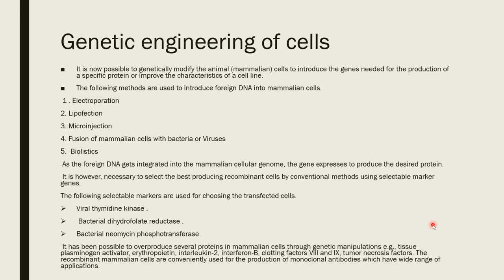As the foreign DNA gets integrated into the mammalian cellular genome, gene expression can produce the desired protein. After the desired protein is produced, we need to select the recombinant cells. Selectable markers such as thymidine kinase, bacterial dihydrofolate reductase, and bacterial neomycin phosphotransferase can be used to select them, and then the specific genetic engineering product can be obtained.